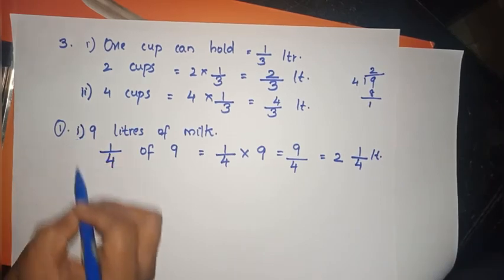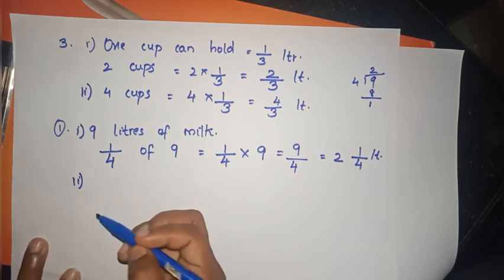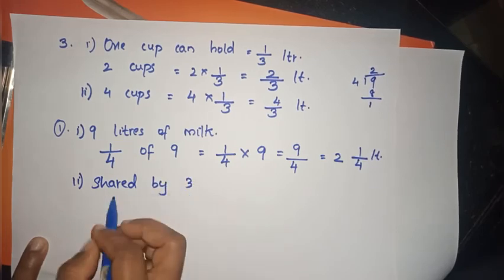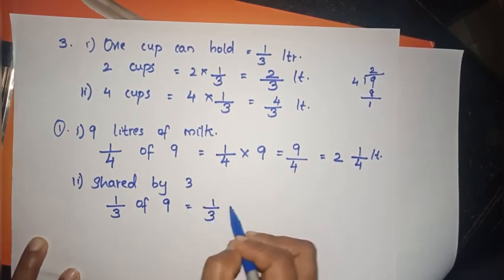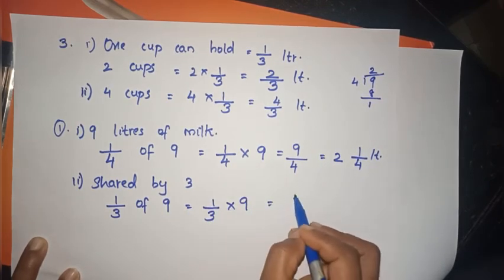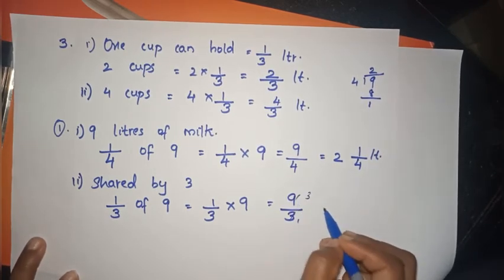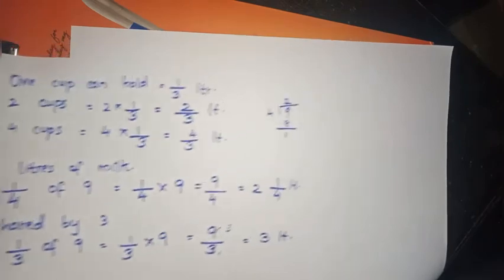Second part: what if it were shared by 3? Shared by 3: we calculate 1/3 of 9, which is 1/3 into 9. The numerator is 9. 3 into 9 equals 3, so each child gets 3 liters.